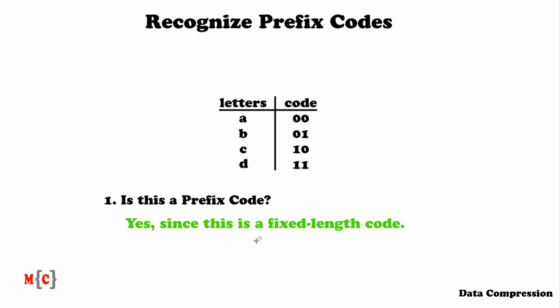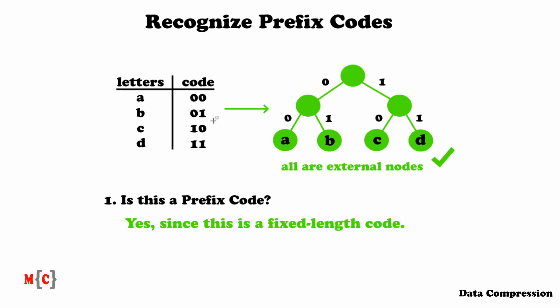We don't have to draw a binary tree to check this, but I drew one anyway and a nice insight emerges: all codewords are external nodes and end up at the bottom of the tree. Because they all have the same length, they will always have the same depth in the binary tree — that explains why they must all be leaves and therefore it must always be a prefix code. If you see a fixed-length code, you can directly state that it must be a prefix code.